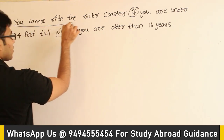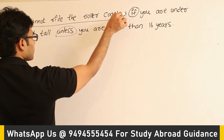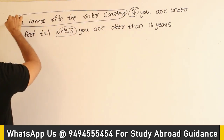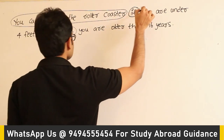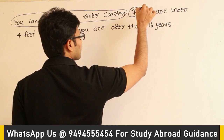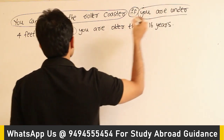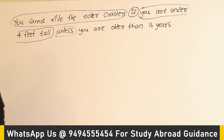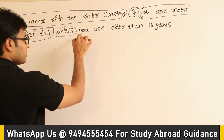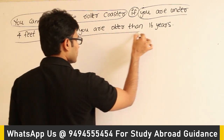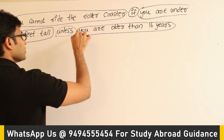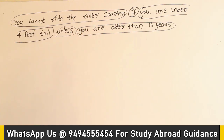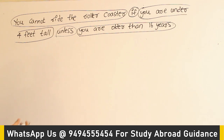For this statement — 'you cannot ride the roller coaster' — I want to give one variable. And for this statement — 'you are under 4 feet tall' — I want to give one variable. And then this one — 'you are older than 16 years' — I want to give one variable. After forming the variables, we can use the connectives and connect them all.